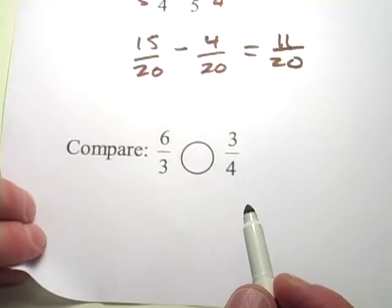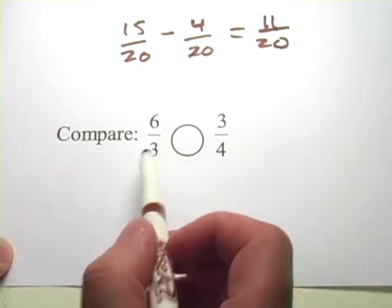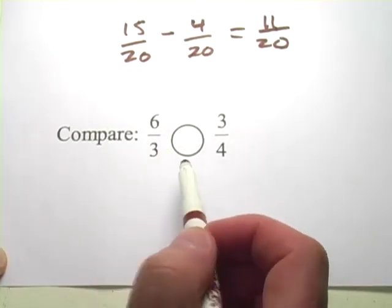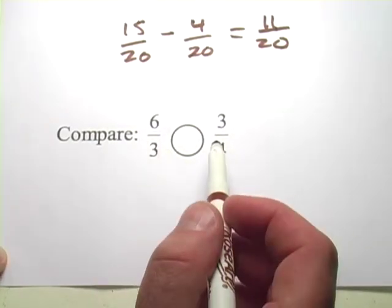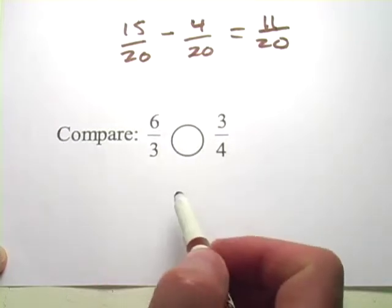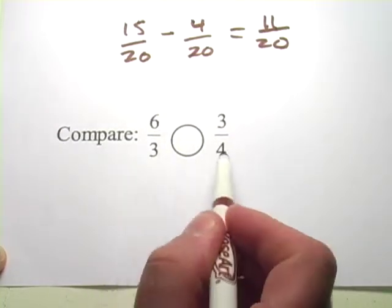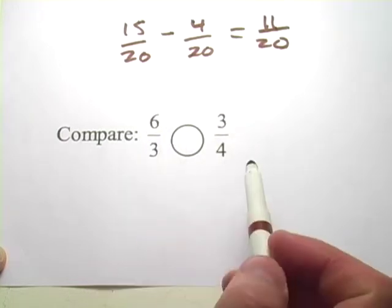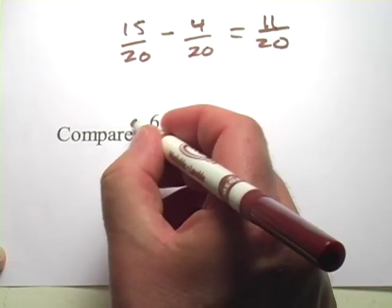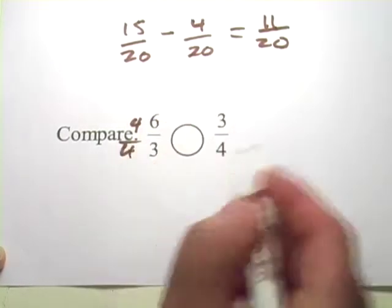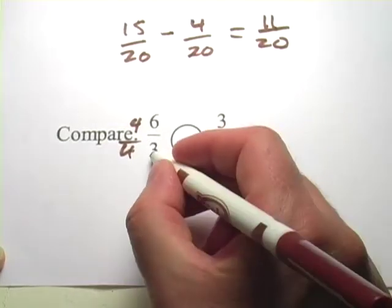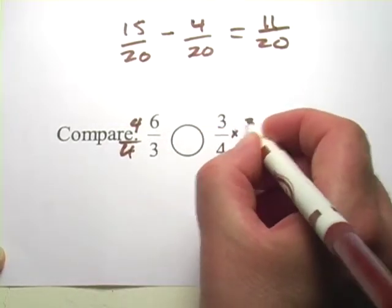Alright, let's try one more. Here we're being asked to compare. So is 6 thirds greater than, less than, or equal to 3 fourths? Again, you can use the same trick to set the denominators the same. Once the denominators are the same, you can just compare the numbers on the top. So let's try that. 4 over 4, because there's a 4 over here. And this one's a 3, so times 3 over 3.